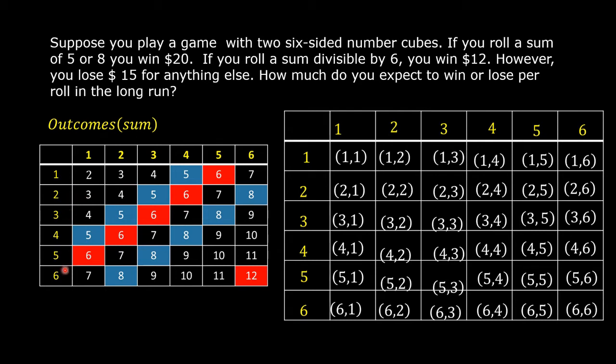The numbers between the first row and the first column are the outcomes. Each is a sum of the numbers in each pair. For example, 1 plus 1 is 2, 1 plus 2 is 3, 1 plus 3 is 4, 1 plus 4 is 5, 1 plus 5 is 6, 1 plus 6 is 7.